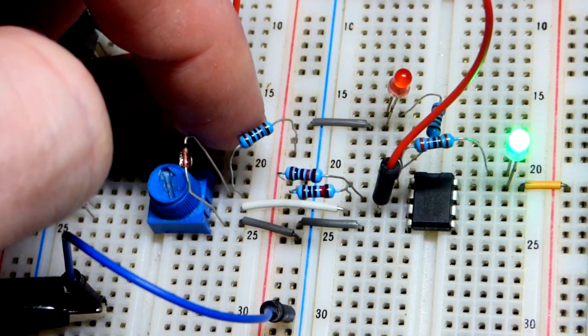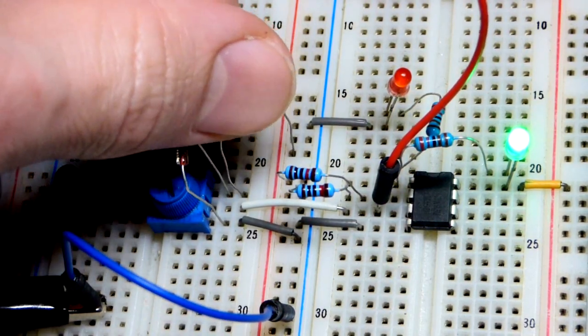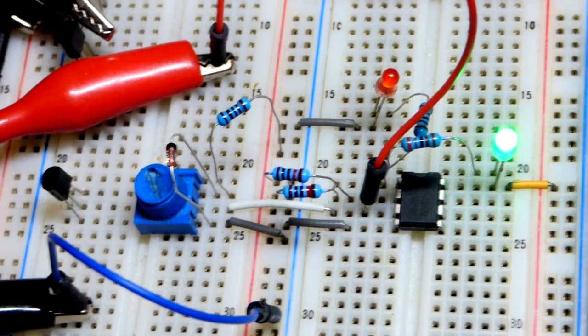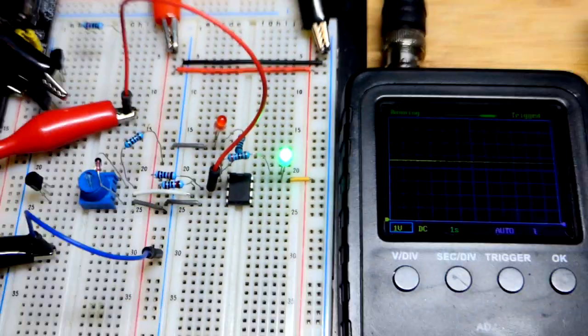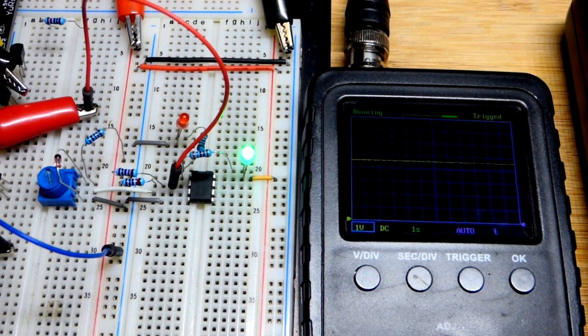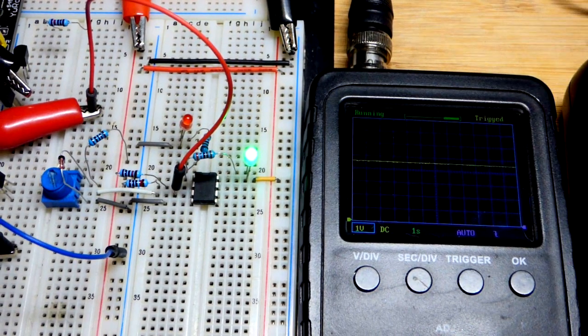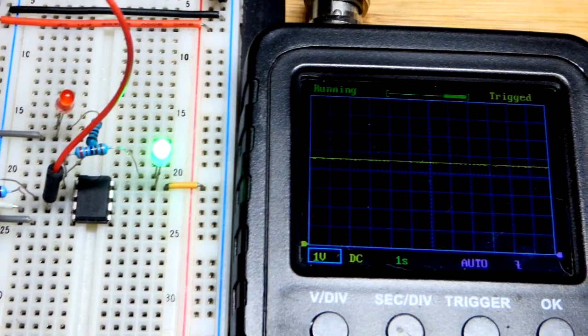In the last couple of scenes, I accidentally removed this one kilo ohm resistor. Should have left that there the entire time, sorry if that caused any confusion. Now we can see the voltage that we are setting with the trim pot.